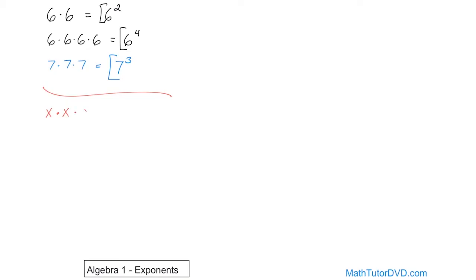Let's do that a few times. x times x times x. So here we have the variable x multiplied by itself how many times? Five times. You just count them up. One, two, three, four, five. So the exponent is x to the power of 5. The exponent is 5 in that case.